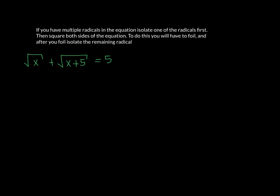And then after you FOIL, you isolate the remaining radical and solve. So let's see what we get. So first I'm going to subtract the square root of x over to the right side. And I end up with the square root of x plus 5 equals 5 minus the square root of x.